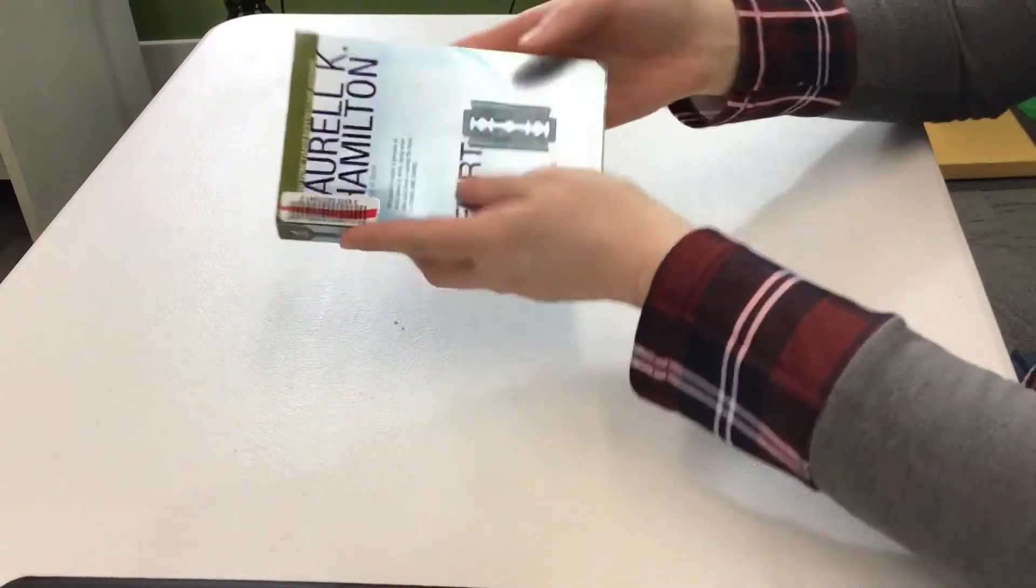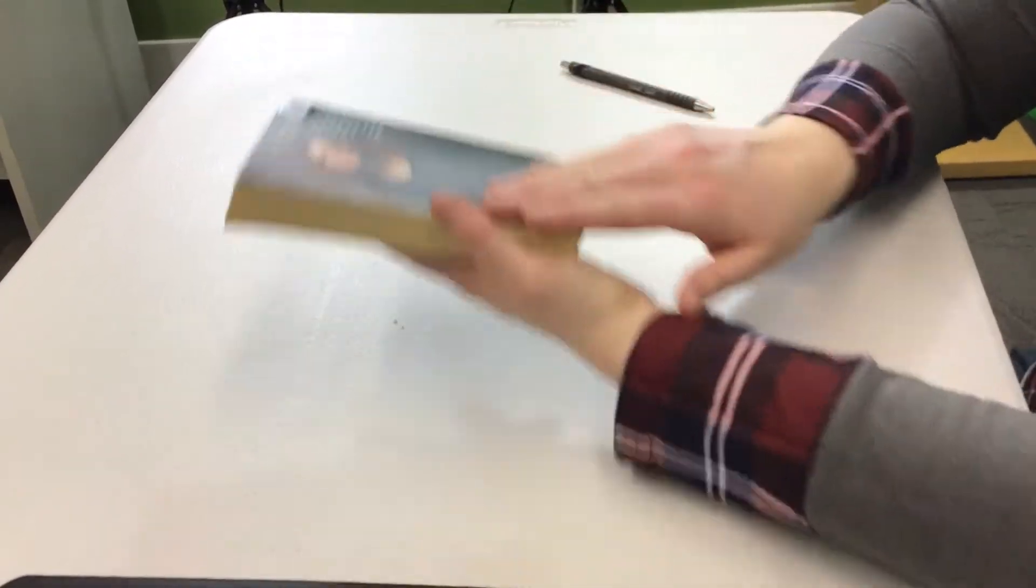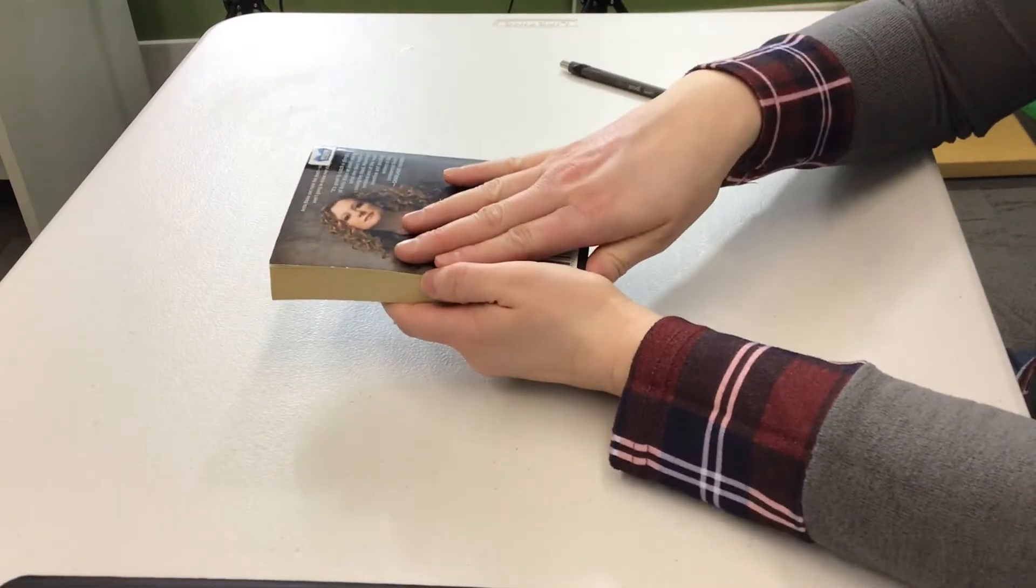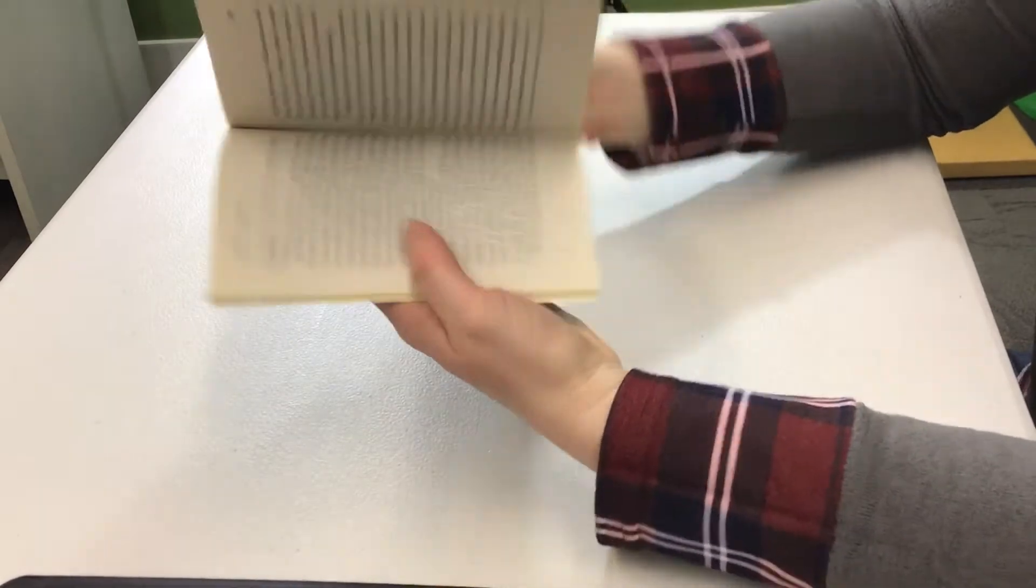So to start off with, you're going to need an old book. Now, this one has been discarded, so it isn't an older book. We didn't just take it off the shelf, so we can use it for our book art. We're going to make some art with it.